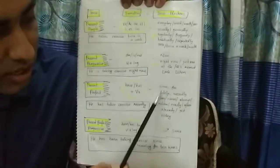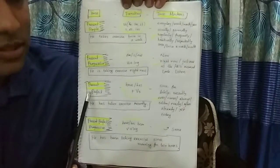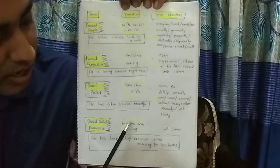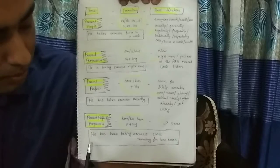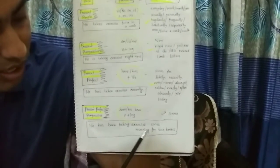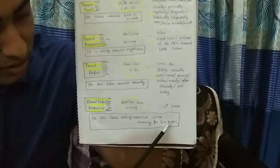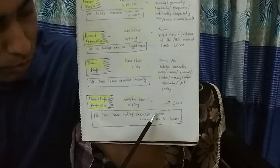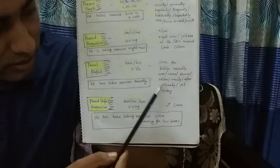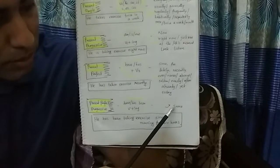And then present perfect progressive: have or has been plus verb plus ing. Look at the example: he has been taking exercise since morning, for two hours. Since refers to point of time and for refers to period of time. The markers will be the same for present perfect and present perfect progressive.